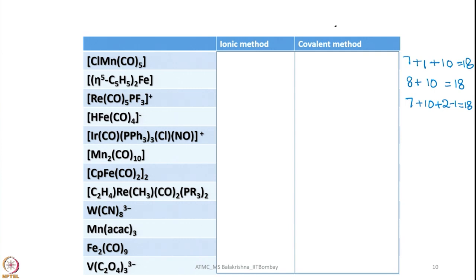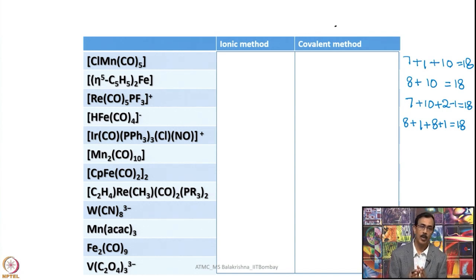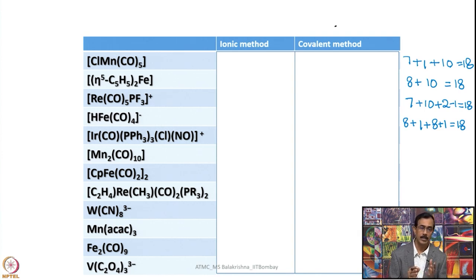For HFe(CO)4 minus: iron gives 8 electrons, H gives 1 electron, CO gives 8 electrons, and there is a negative charge so we add 1, giving 18 electrons. In the covalent method, for a cationic complex you subtract electrons equal to the charge; for an anionic complex you add electrons. In the ionic method, charge is already accounted for — no further addition or subtraction is needed.